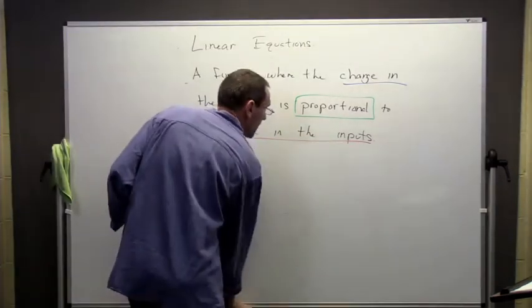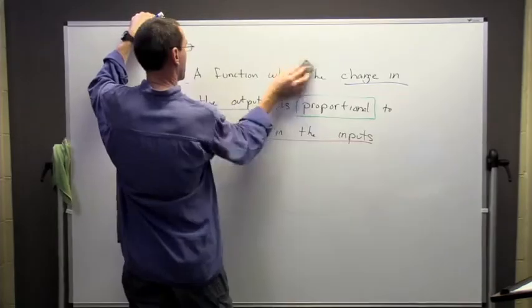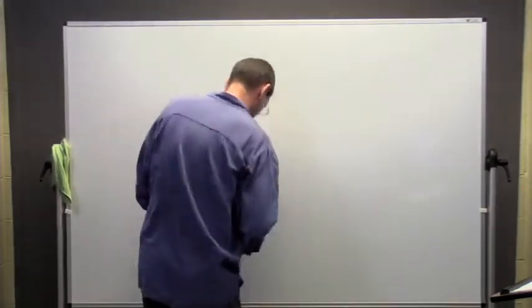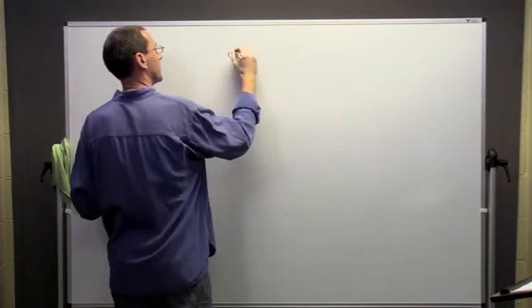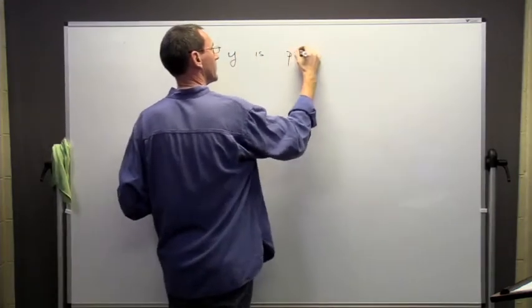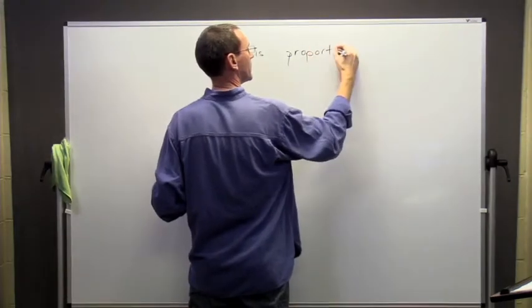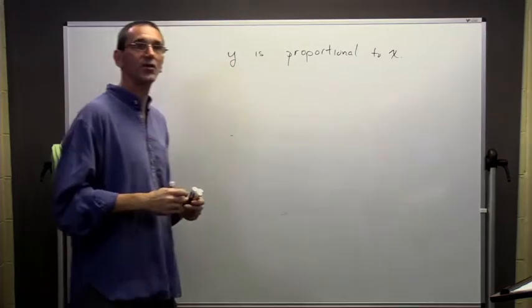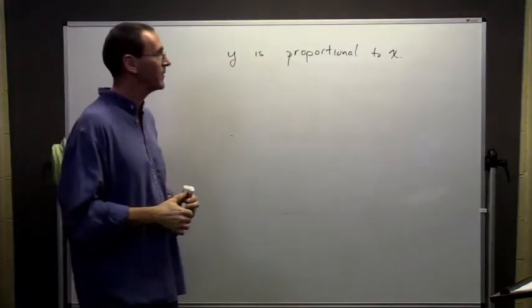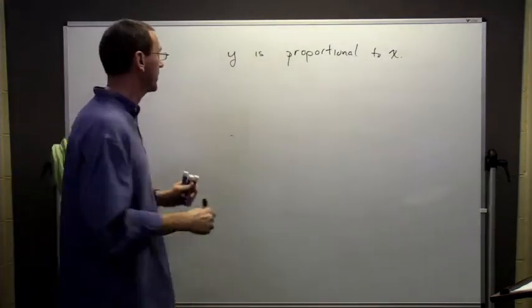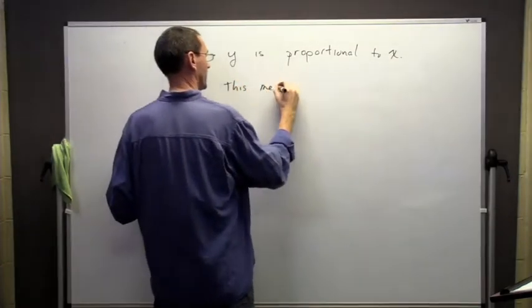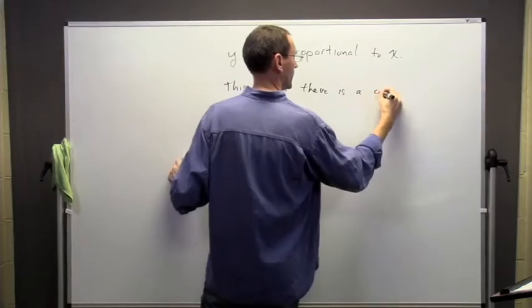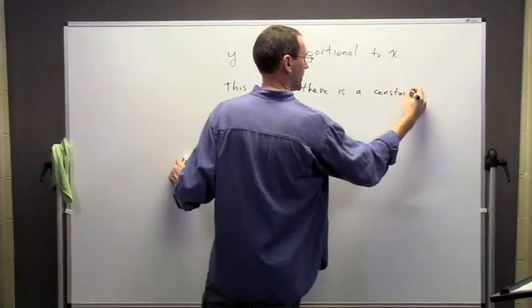So the idea about proportionality is this. Suppose I tell you that two quantities are proportional to one another. In this case, we'll say y is proportional to x. So what does that mean?